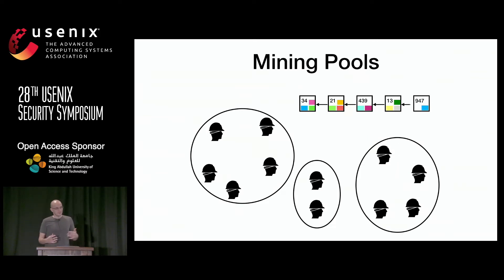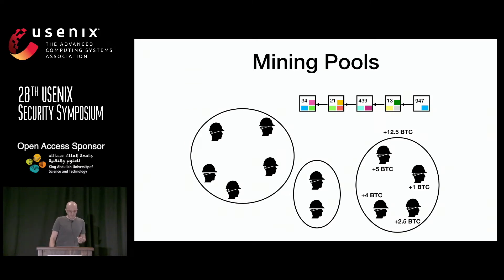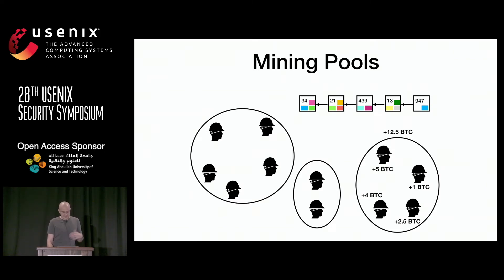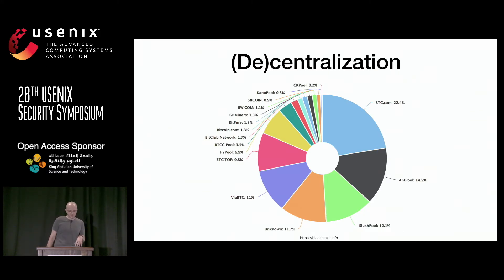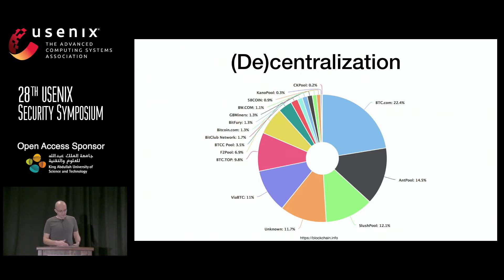A mining pool has a manager who validates transactions and creates new blocks, while the rest of the pool mines them. Whenever the pool finds a block, the reward is shared among members. However, from the protocol perspective, the pool is a single entity. As you can see in the distribution of computing power in the Bitcoin network, three of the biggest mining pools hold about 50% of total computing power. This creates a trade-off: while miners join pools to stabilize income, it reduces the number of validating nodes, increasing centralization and security risks.